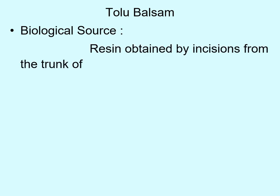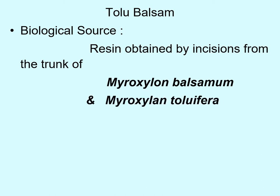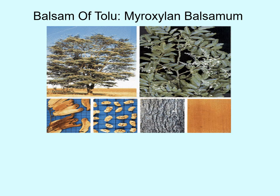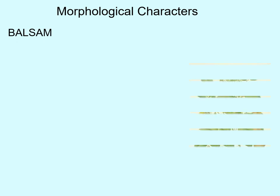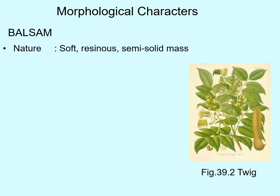Tolu Balsam has a biological source: it is a special balsamic resin. This resin is obtained after incision from the trunk or the branches of Myroxylon balsamum, as well as another species, Myroxylon toluifera, which belongs to the family Leguminosae. The balsam of Tolu — Myroxylon balsamum — is a big tree from whose various branches this balsamic resin is collected, as shown in this picture.